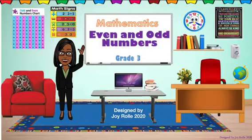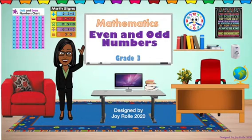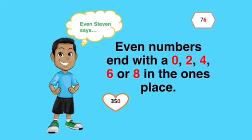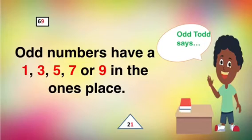Boys and girls, we have come to the end of our even and odd lesson. Remember, even numbers end with 0, 2, 4, 6, or 8. Odd numbers end with 1, 3, 5, 7, or 9.